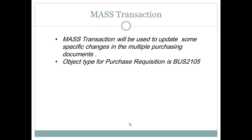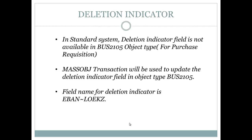The object type for purchase requisition is BUS2105. Every document type has its own object type. Today we are going to cover the purchase requisition, so the object type for that is BUS2105. In the second step we are going to use the deletion indicator field, which is not available in the standard object type BUS2105.